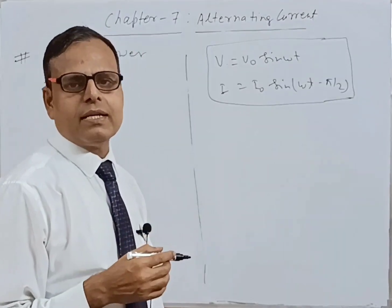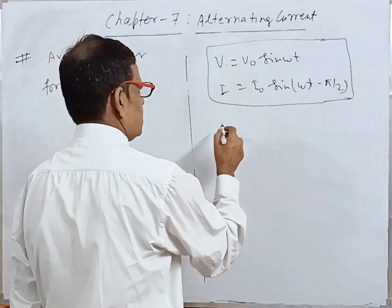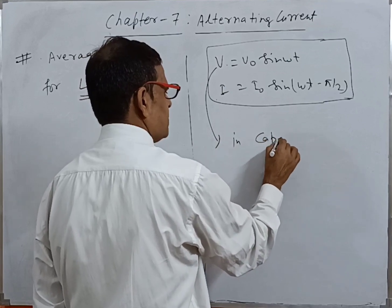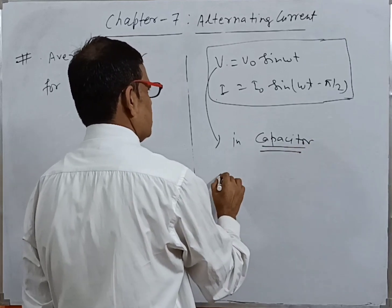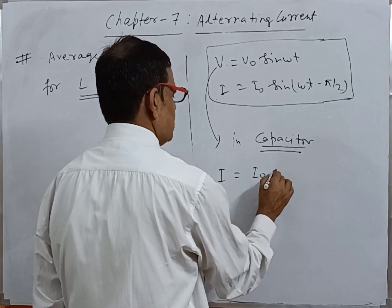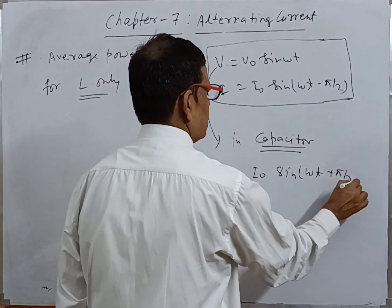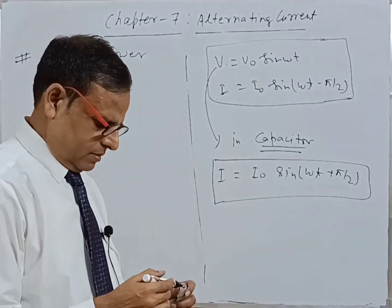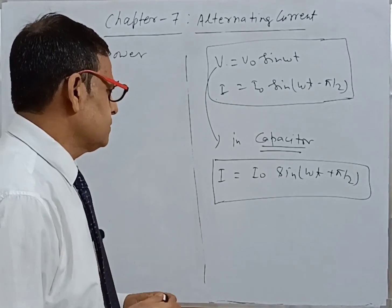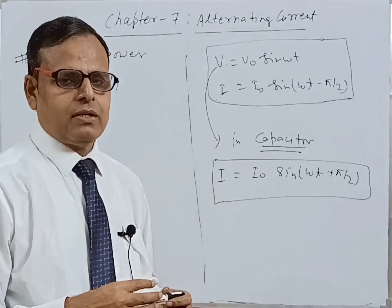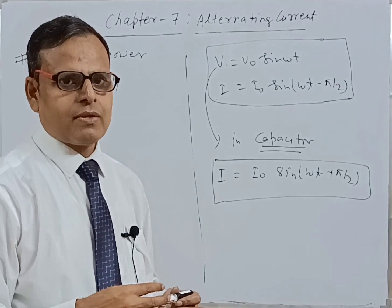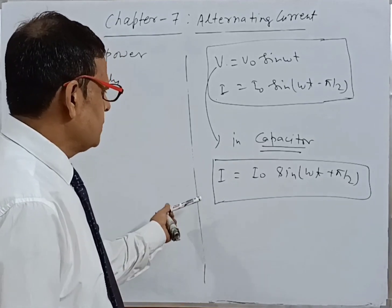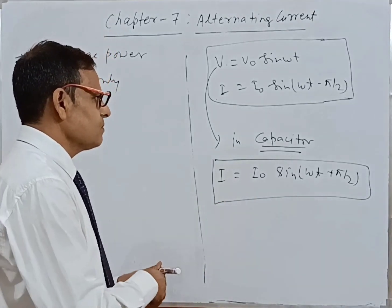In the case when a capacitor is the only circuit element, I = I₀ sin(ωt + π/2) — current will lead. I will also explain in a future video why current leads in an AC circuit when C is the only element, and why current lags by π/2 in L only.